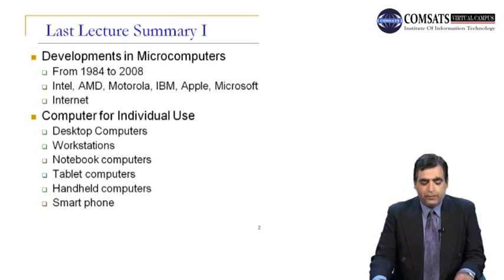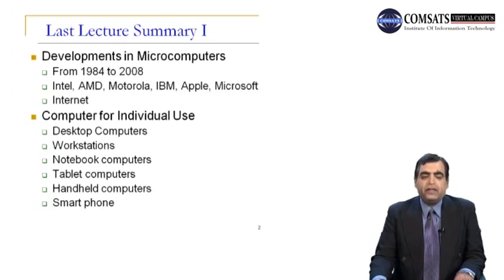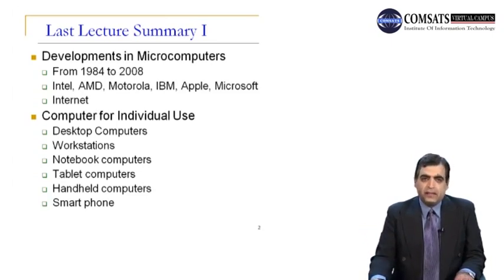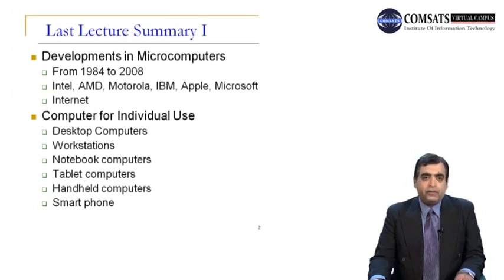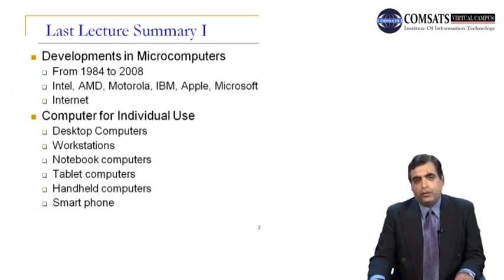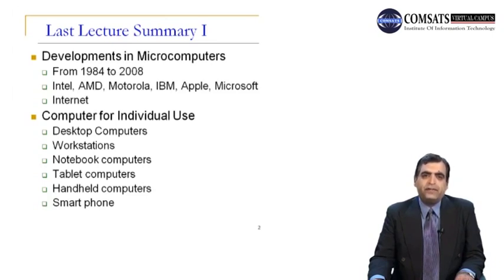Then we talked about tablet computers, another type of portable personal computer that can accept handwritten input when the user touches the screen with a digitized pen. Then we discussed handheld computers, which are computing devices that fit in your hand. The Personal Digital Assistant, or PDA, is an example. We also discussed smartphones, which are digital cellular phones that have features found in personal computers such as web browsers and email capability. Blackberries, iPhone, Nokia E72, Nokia C6, and Samsung Galaxy Note are all categorized as smartphones.